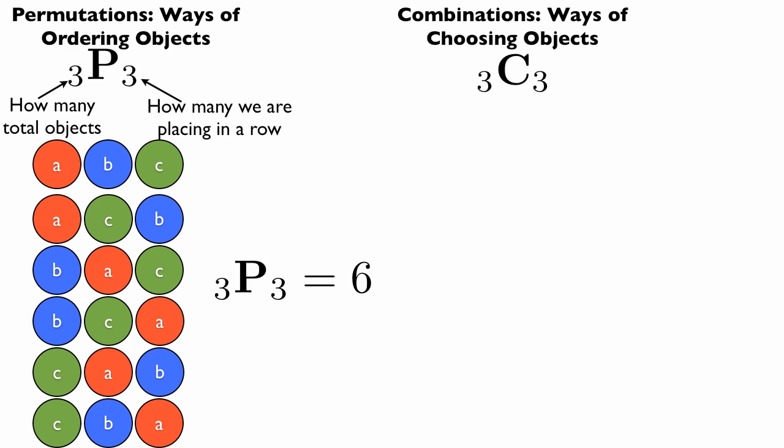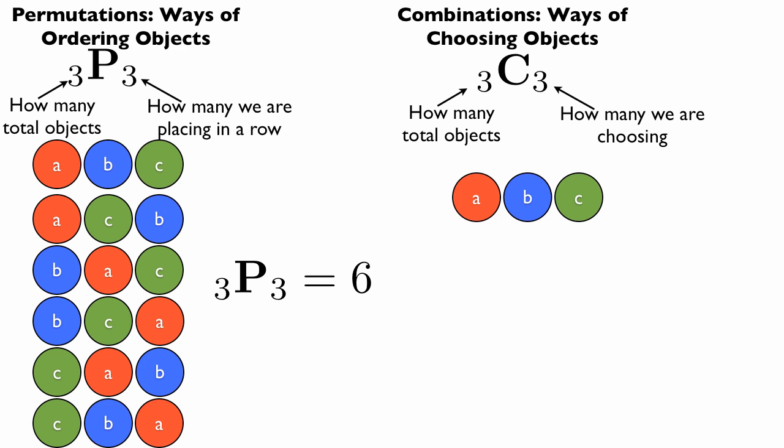So 3C3 means we have three total objects and we choose three of them at a time, and how many different ways are there to choose the three objects? Well, in this particular case, there's only one way to choose three distinct objects because we're not going to include all the different orders. Therefore, 3C3 is one. This is the first case; we're going to go through a few different cases so you get the idea.